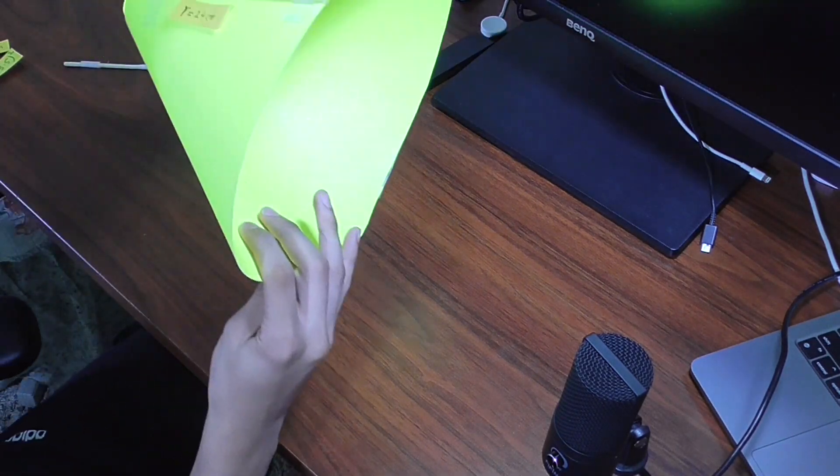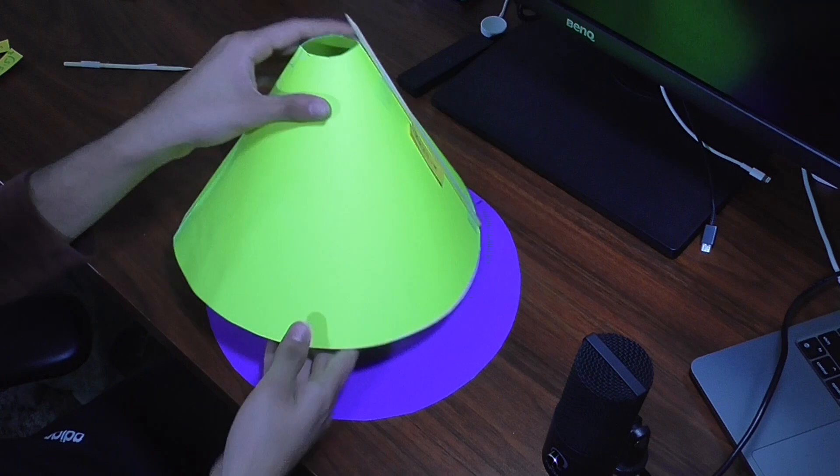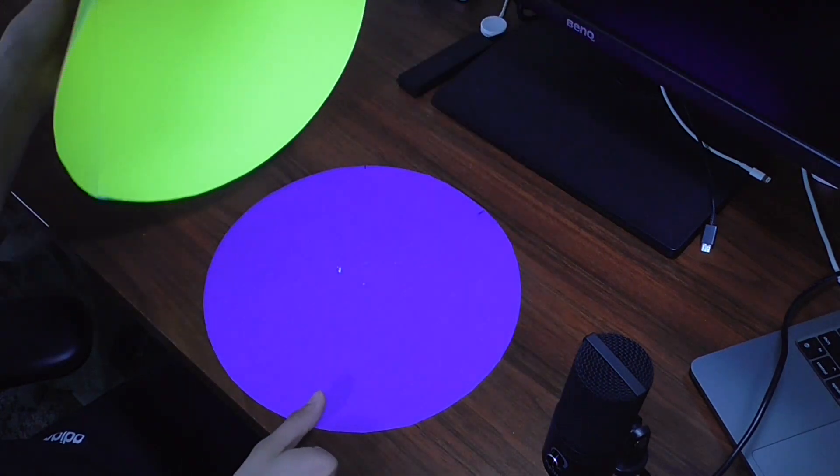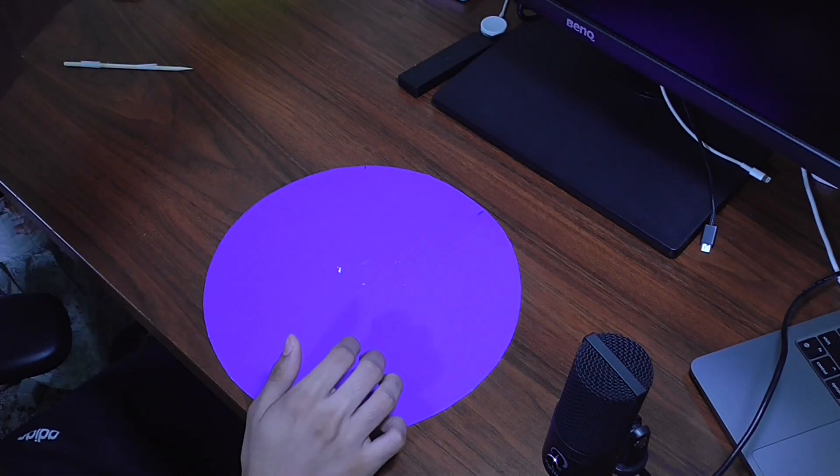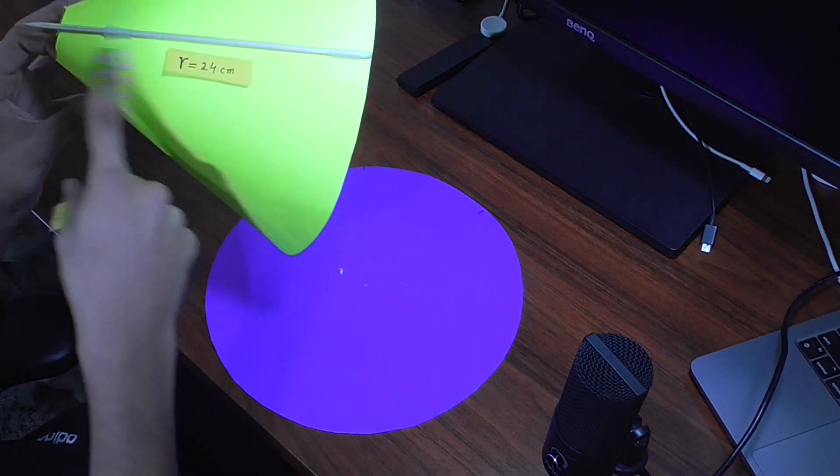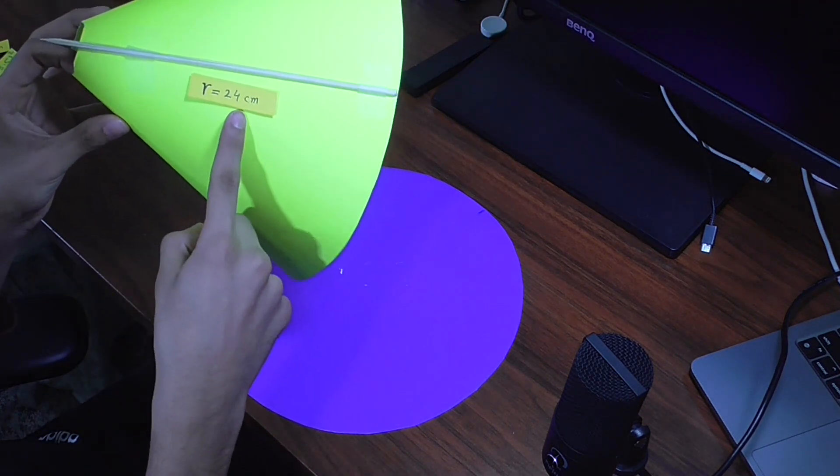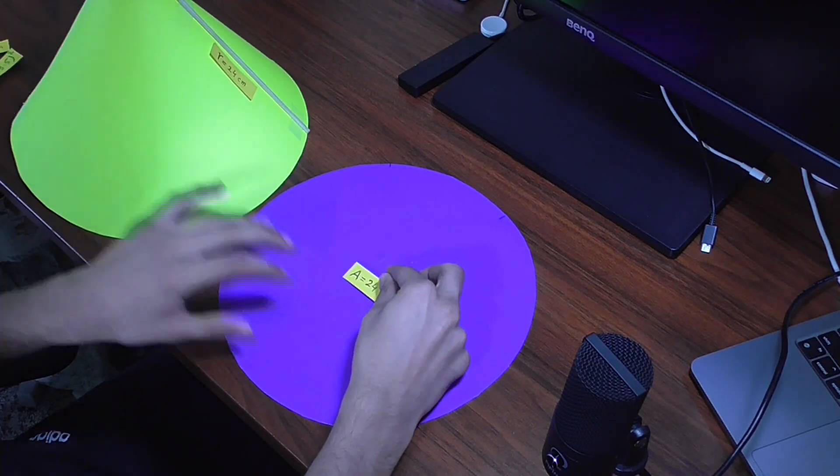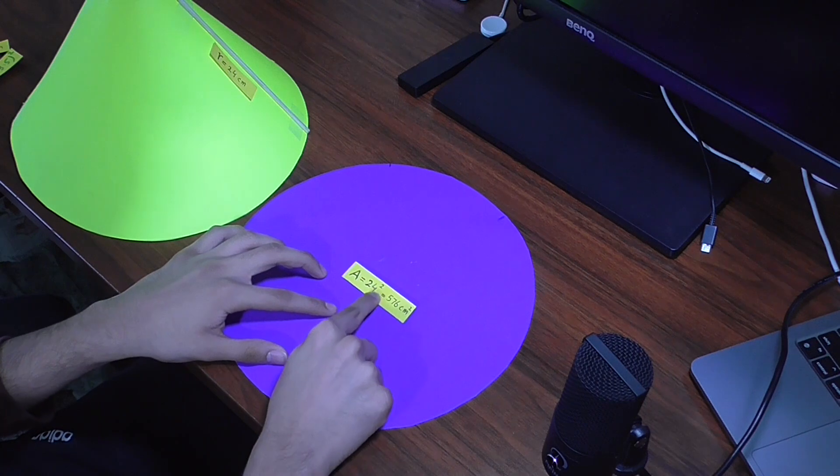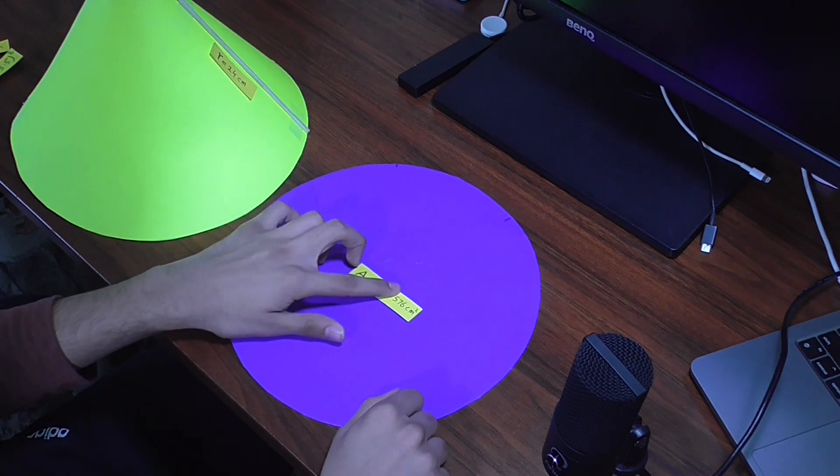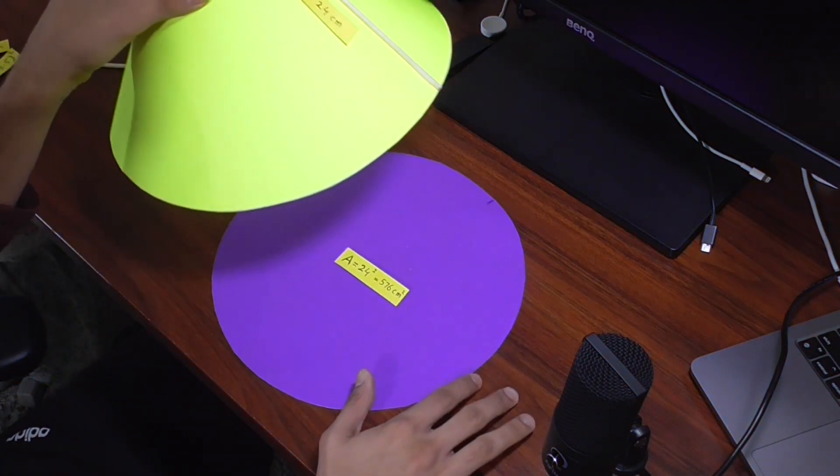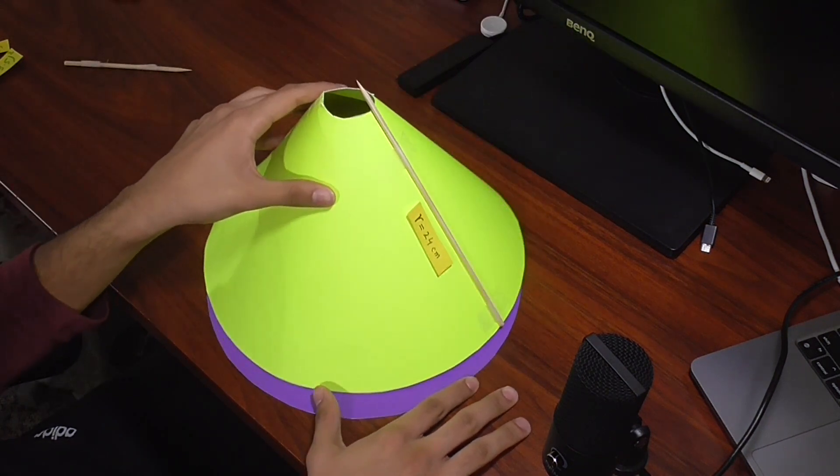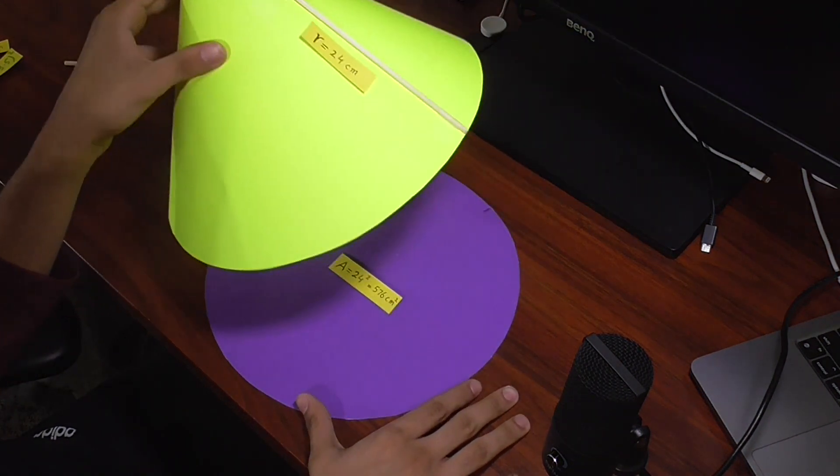So the base of this cone must have an area of the length from the vertex to the base, which is 24 centimeters squared. So the area of this base is 24 squared or 576 square centimeters. And you can see that the base fits from the top section of the cone.